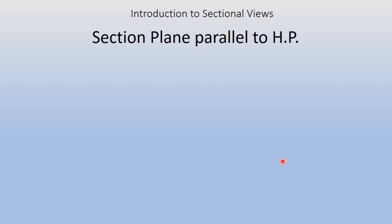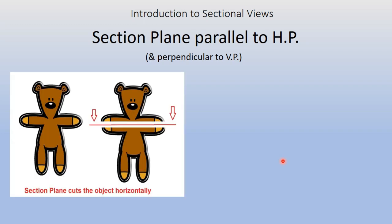In the first case, let us see the section plane parallel to HP. Let us also assume that the section plane is perpendicular to VP. When you cut something horizontally, the section plane becomes parallel to HP. If this is your section plane and this is the VP, the section plane will be aligned parallel to the HP plane. So this cutting plane is now parallel to HP.